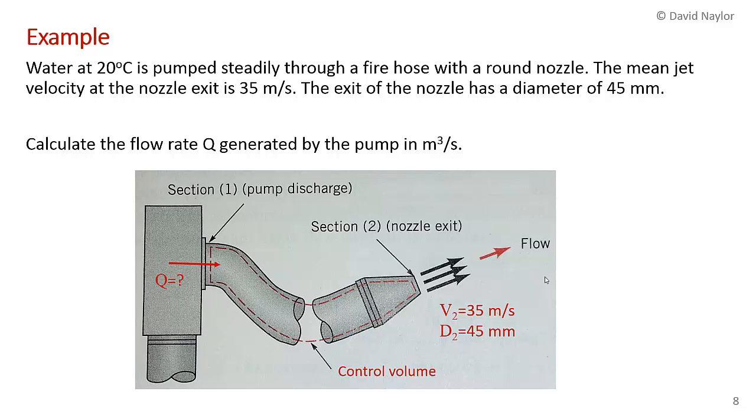I'd like to end the video with a short, simple example. What I'm considering here is water being pumped steadily through a long fire hose with a nozzle at the end. The mean jet velocity at the nozzle exit is 35 meters per second. I've written the conditions here: 35 meters per second and the exit diameter is 45 millimeters. What we want to calculate is the volume flow rate that has to be generated by the pump in cubic meters per second. I've drawn a control volume, the dashed red line. We're going to consider the inlet to be section 1 and the nozzle outlet is section 2. We're going to use one-dimensional approximations using average velocities at those sections.